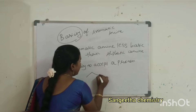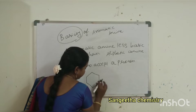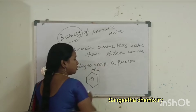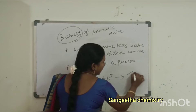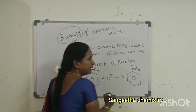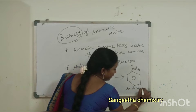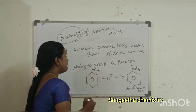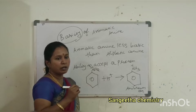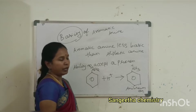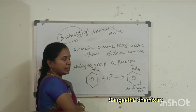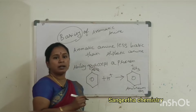For example, take aniline with NH₂. Now we are going to add a proton to it. When we add a proton to aniline, we get the anilinium ion. Aniline has a lone pair of electrons — these electrons are negatively charged, so they can easily attract a positive proton. The lone pair of electrons plays a key role in the basicity and basic character of amines.